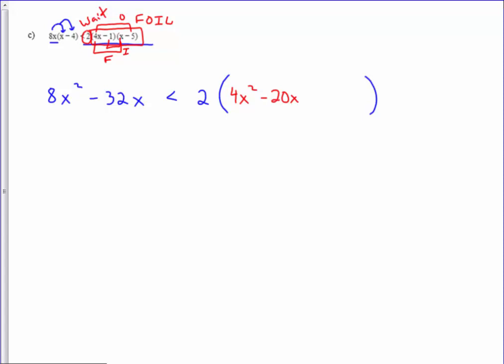And then finally, the last two terms, the negative 1 and the negative 5. So there's the result of my foil step.